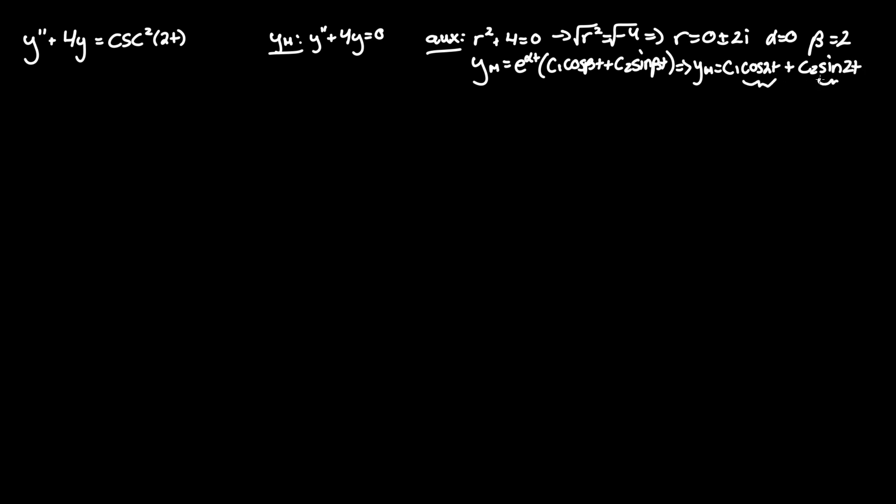We need the cosine and sine terms, we'll call them y1 and y2, so that we can find y particular, which equals v1 y1 plus v2 y2.